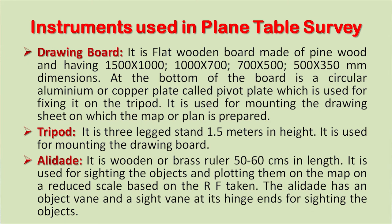Next is the tripod — a three-legged stand 1.5 meters in height, used for mounting the drawing board. Then we have the alidade — a wooden or brass ruler 50 to 60 centimeters in length, used for sighting the objects and plotting them on the map on a reduced scale based on the RF taken.